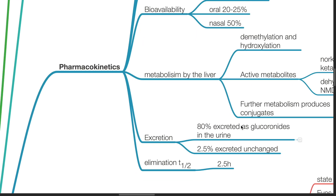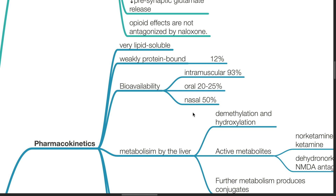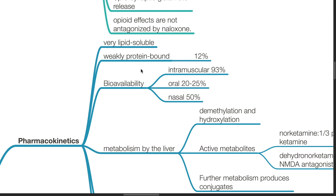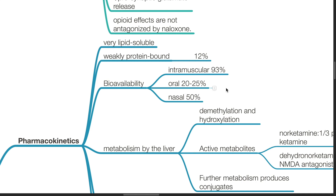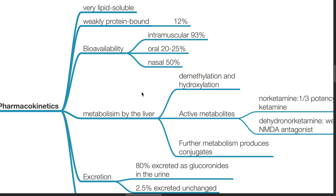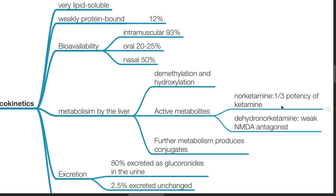Pharmacokinetics of ketamine. It is very lipid-soluble and weakly protein-bound at 12%. Bioavailability for intramuscular injection is 93%, oral is 20 to 25%, and nasal is 50%. It is metabolized by the liver by demethylation and hydroxylation. Active metabolites include norketamine, which has one-third the potency of ketamine, and dehydronorketamine, which is a weak NMDA antagonist. Further metabolism produces conjugates.